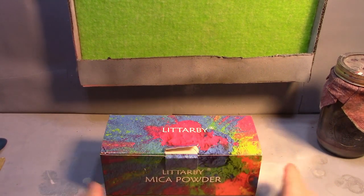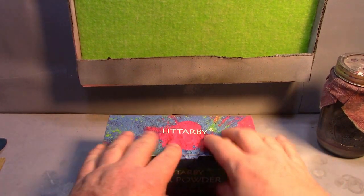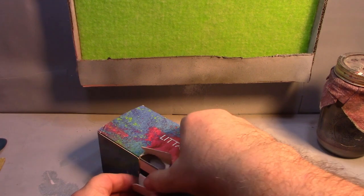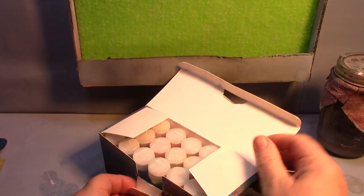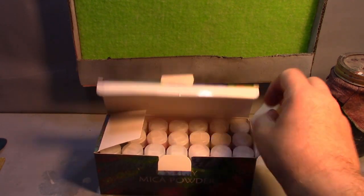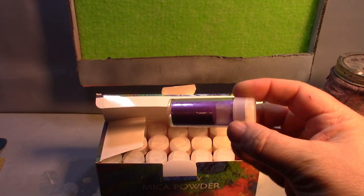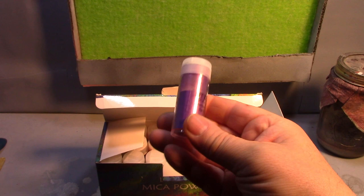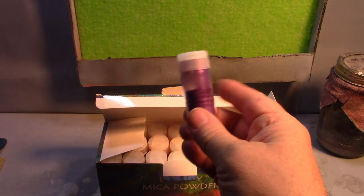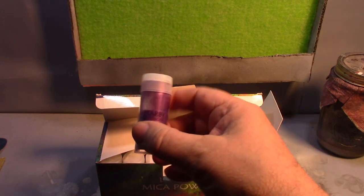So today we're going to try out some mica powders. This is something that I found out about recently, and I think it's going to be very cool. These are little vials of powder. They use this to color soap, homemade soap and candles.